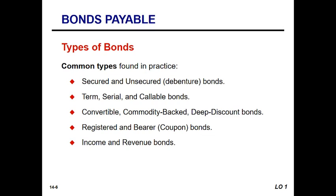Bearer or coupon bonds are much easier to transfer because they are not held in a specific name. Income bonds are interesting because interest is only paid when the company is profitable. Revenue bonds pay interest from a specified revenue source. These are just common bonds found in practice — there are more specialty bonds as well. The basics of bonds apply whether corporate or municipal; the terminology is the same, though the types and provisions may differ. We are only focused on the corporate side here.